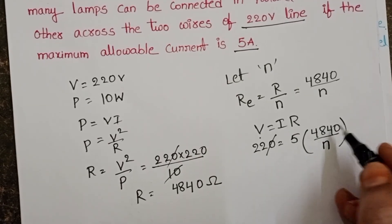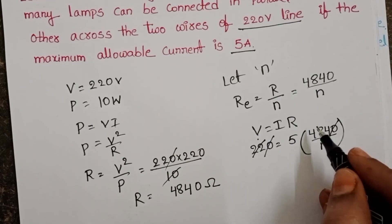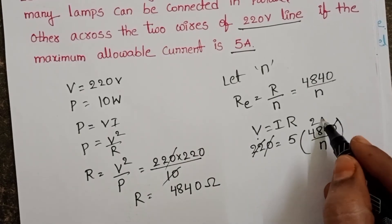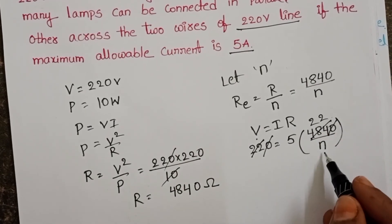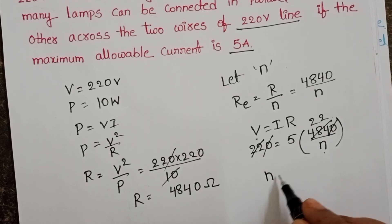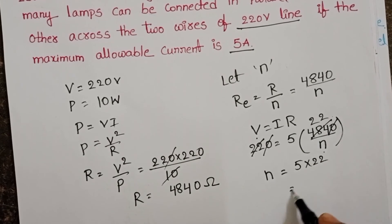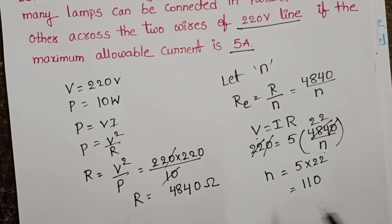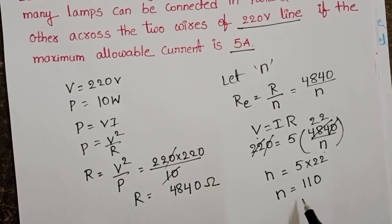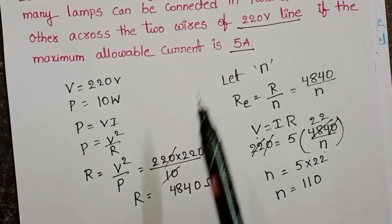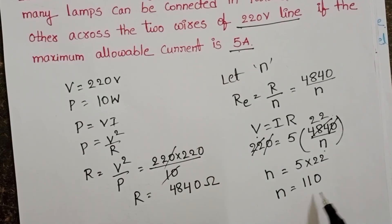On both sides, zero, zero get cancelled. 22 to 44, again 22 to 44. This n goes to left-hand side, n equals 5 into 22, it becomes 110. So, number of bulbs required to get the maximum allowable current of 5 amperes is 110.